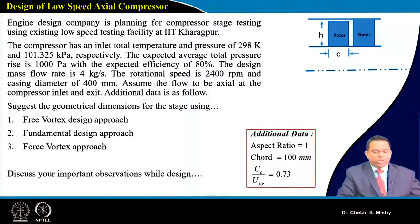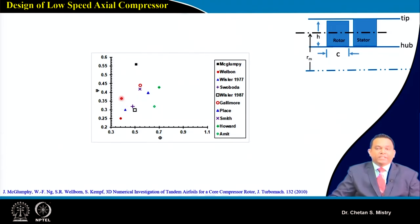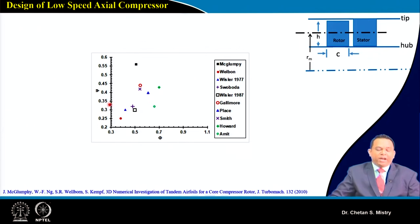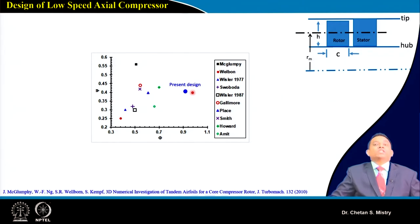The problem asks us to suggest geometrical dimensions for the stage using free vortex design, fundamental design approach, and forced vortex approach, and to discuss important observations. We will use a phi versus psi plot from Malampu's paper showing different high pressure rise configurations for various flow and pressure rise coefficients. Our compressor data lies in a region of larger flow coefficient and moderate pressure rise coefficient.